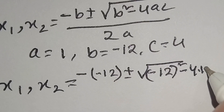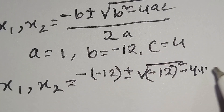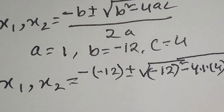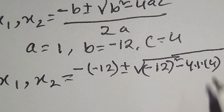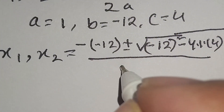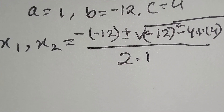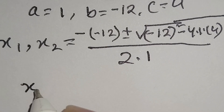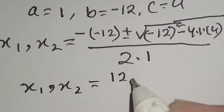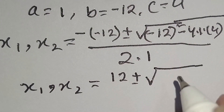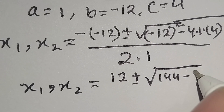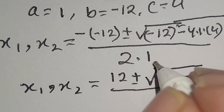A is equal to 1 and C is equal to 4, over 2 times A which is equal to 1. So we can write x1 and x2 is equal to minus of minus 12, plus or minus square root of minus 12 whole square, which is 144, minus 4 times 1 times 4 which is 16, all over 2 times 1 equals 2.